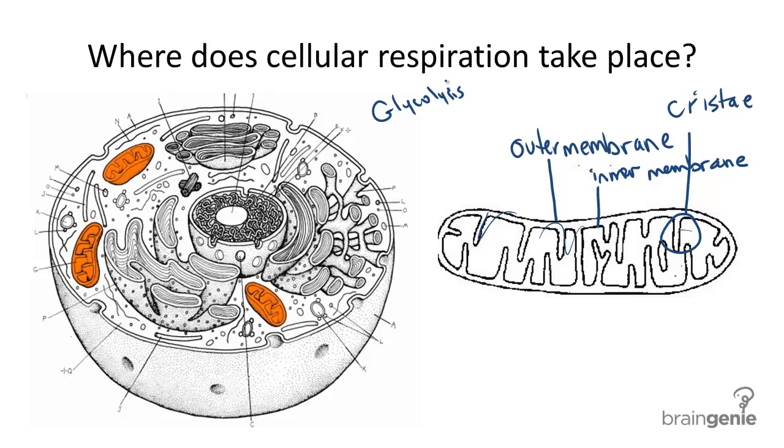Then, these half of glucose molecules enter the matrix, or the middle of the mitochondrion, which I'll label here. This middle of the mitochondrion, or the matrix, is important because it's the location of the citric acid cycle, or the Krebs cycle. So let's indicate that here, Krebs.